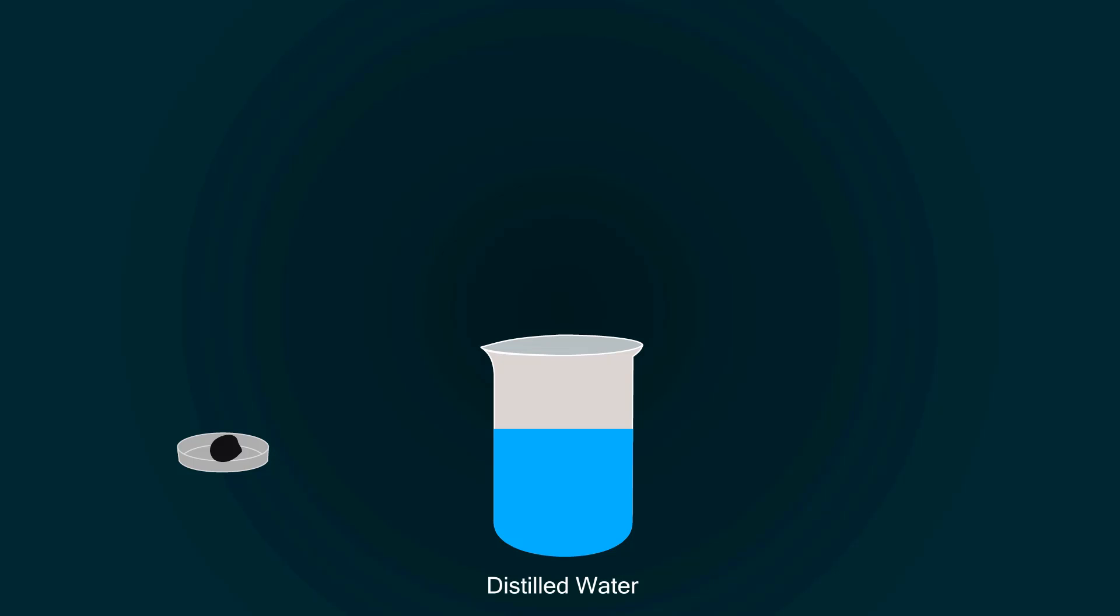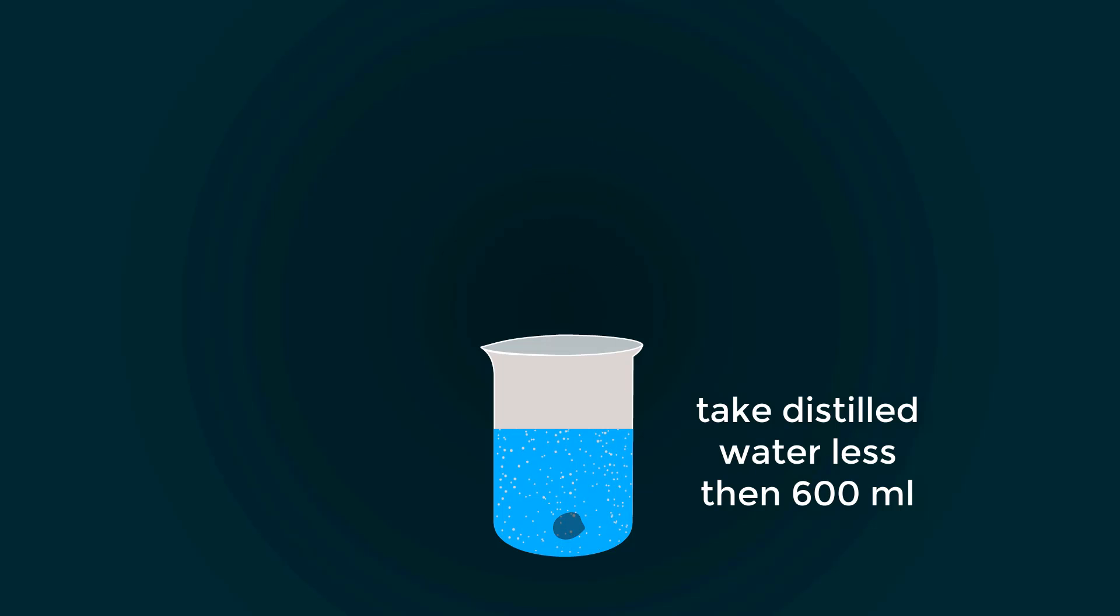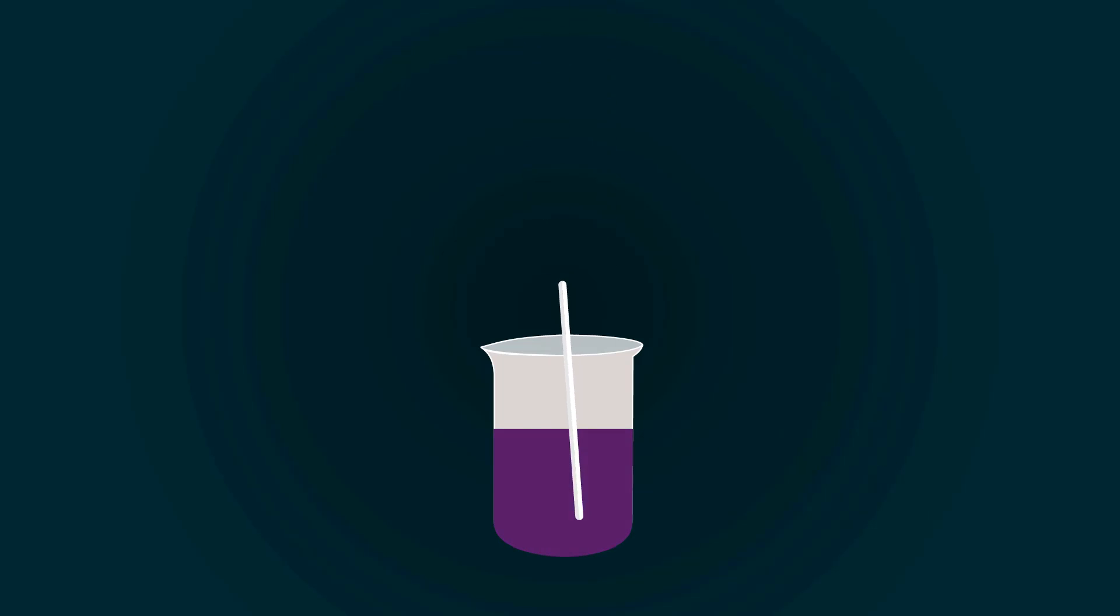Now add the potassium permanganate into the distilled water. You can take distilled water up to 600 milliliters for mixing. You have to make homogeneous mixture.